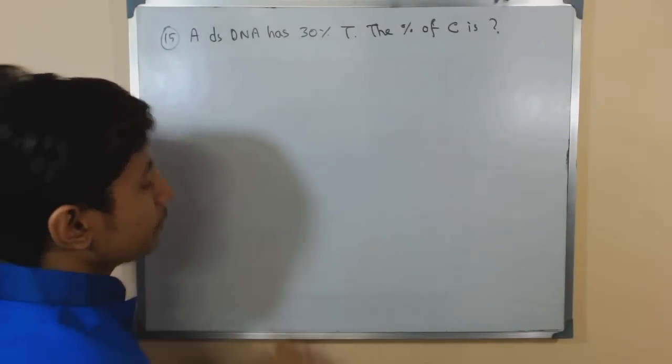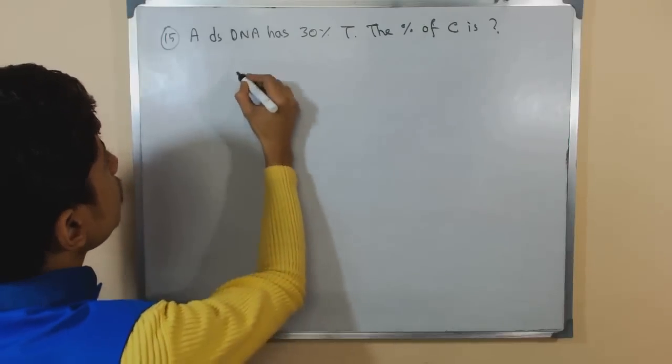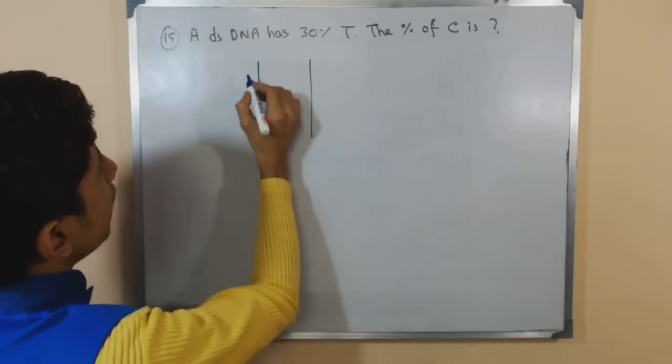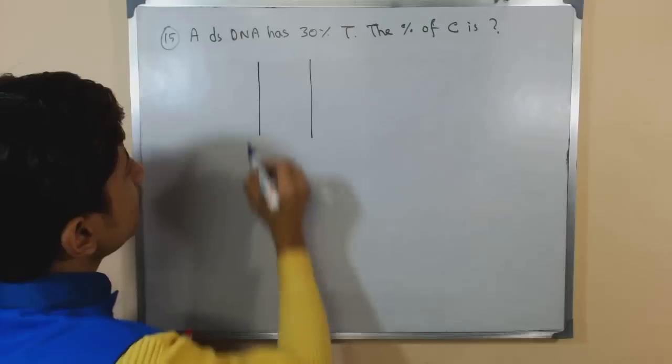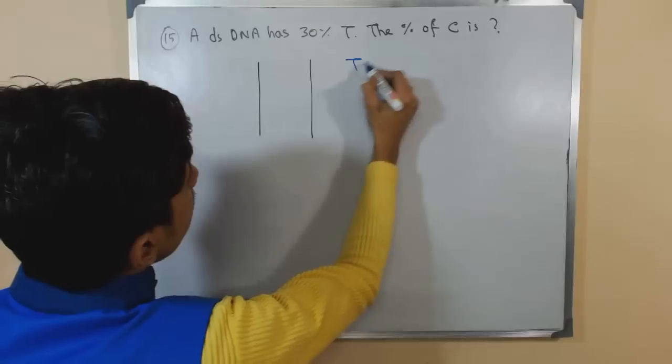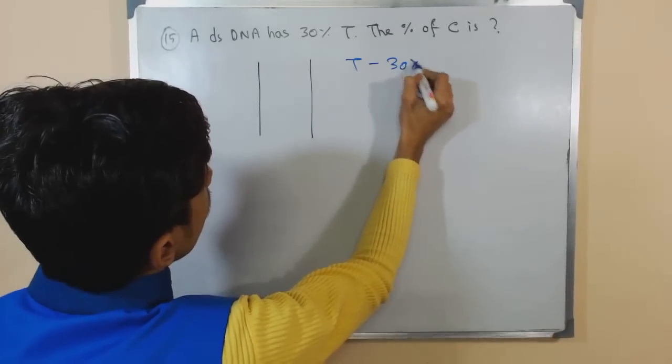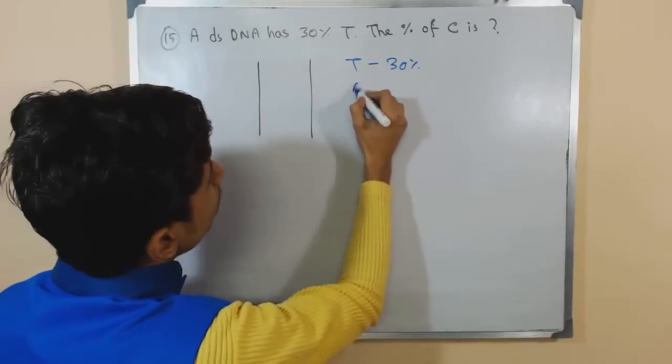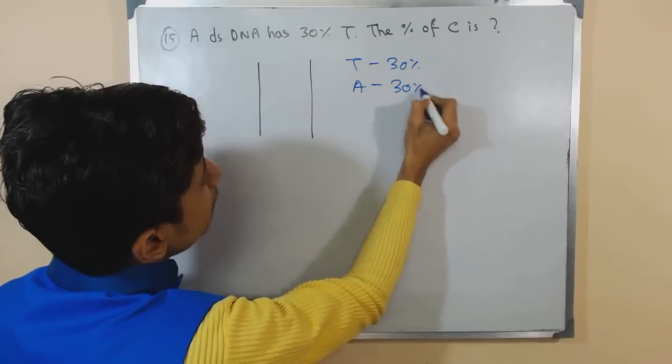The double-stranded DNA is having 30 percent thymine. If I draw the complementary strand here, if we have 30 percent thymine in all these cases, thymine is 30 percent. Definitely thymine will be paired with adenine, so obviously adenine also will be present in 30 percent ratio.